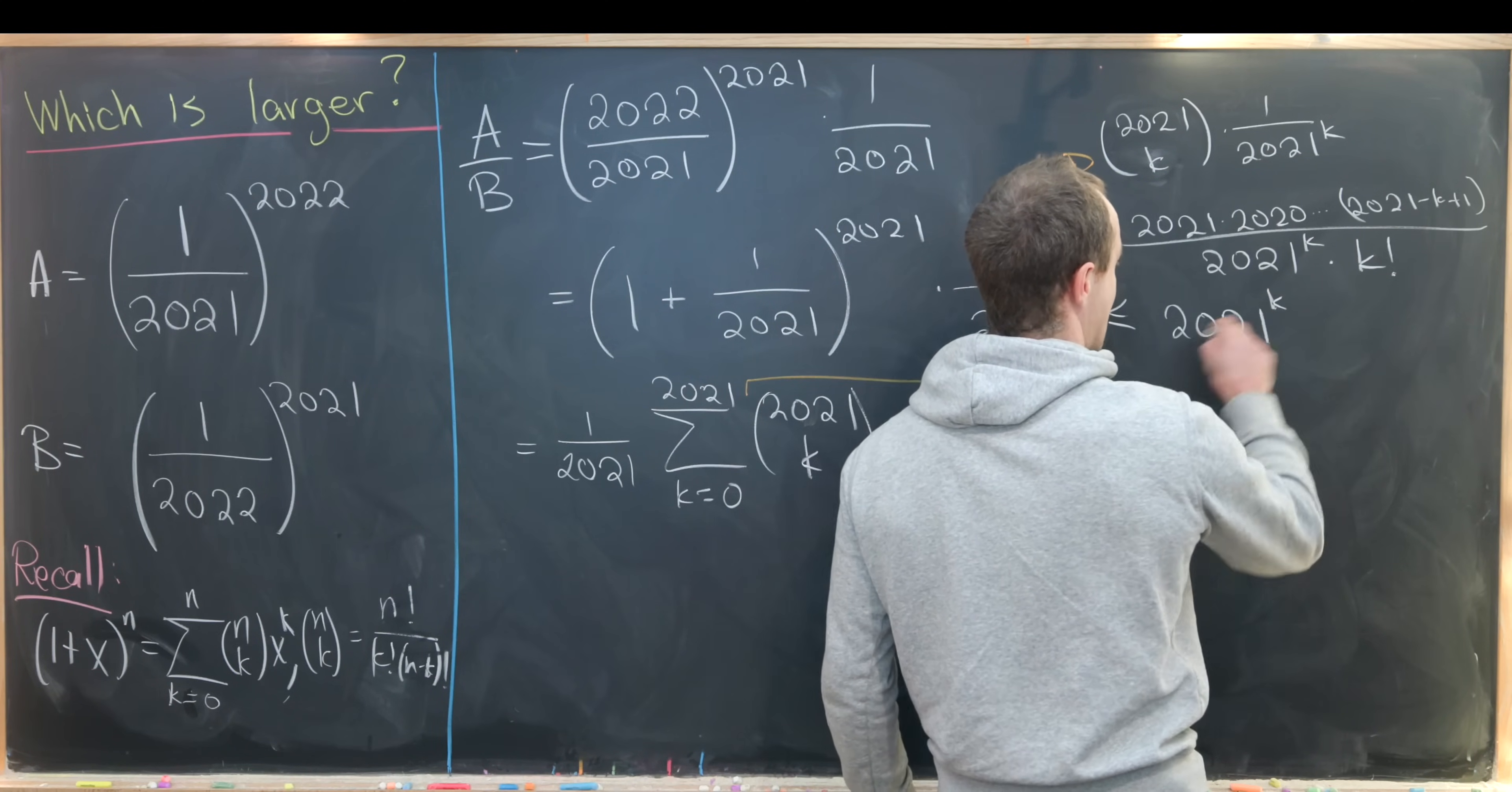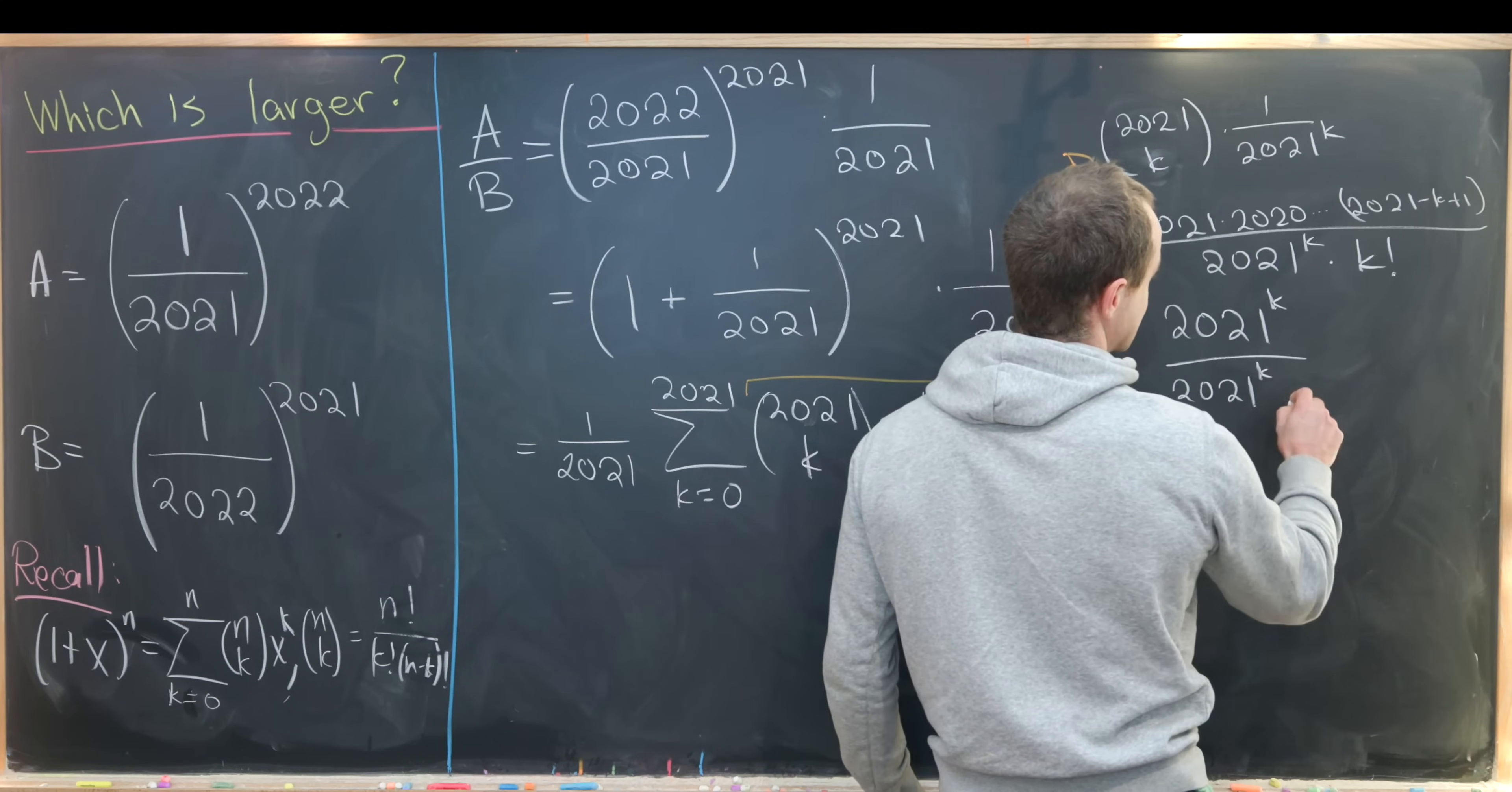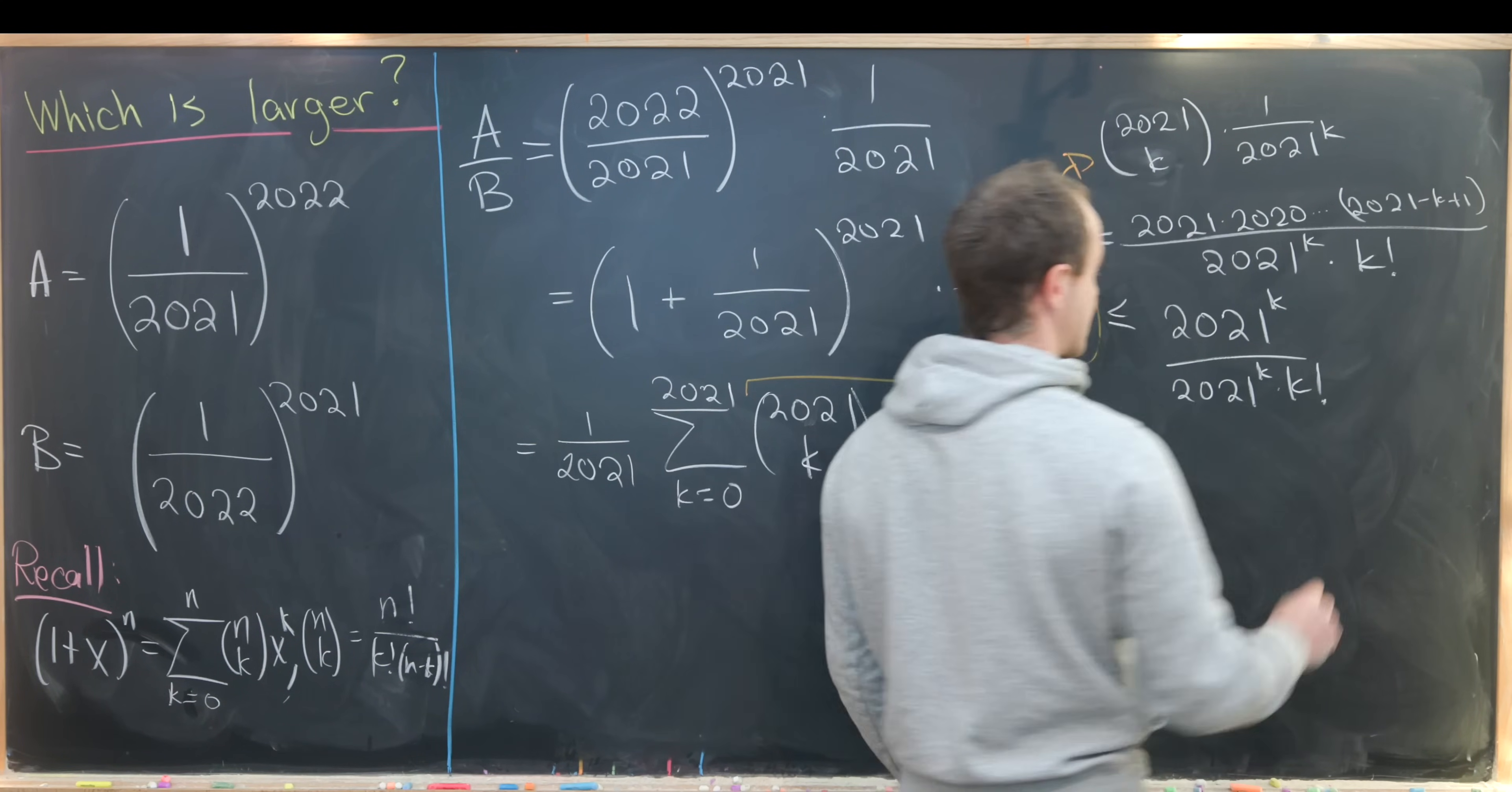But there are exactly k things in the numerator. So if I replace all of them I have 2021 to the k over 2021 to the k times k factorial.